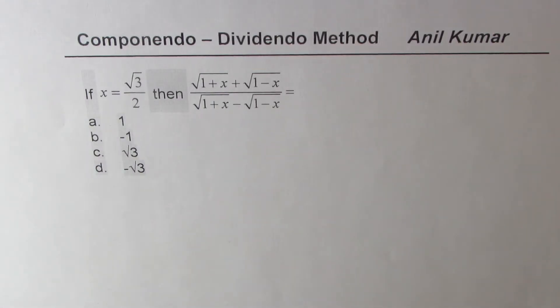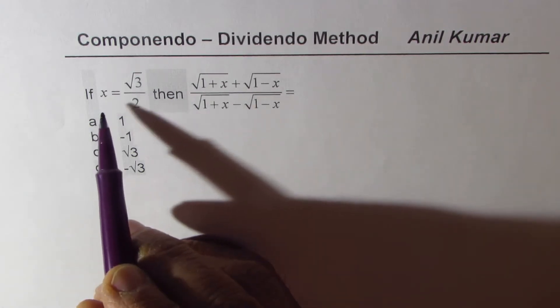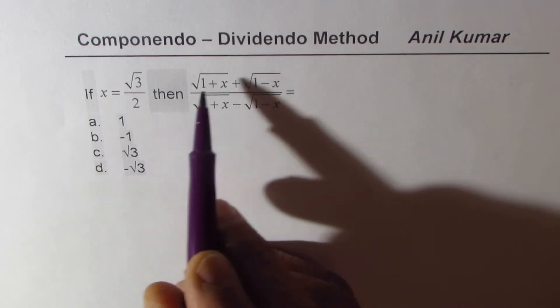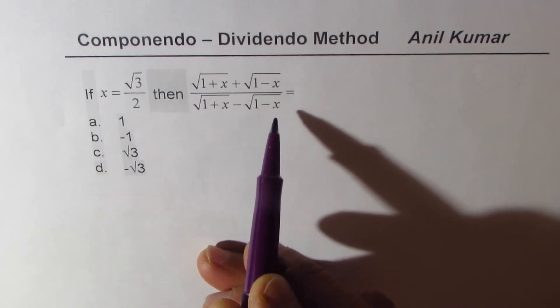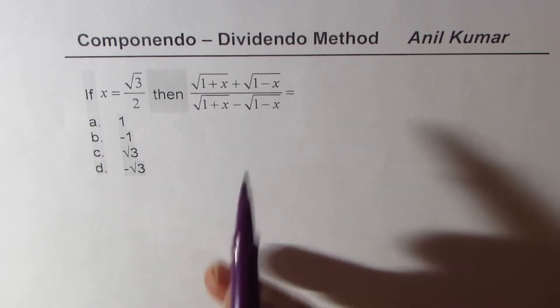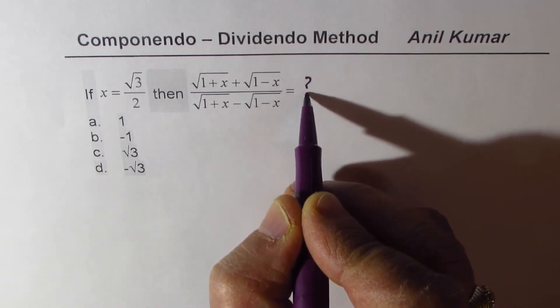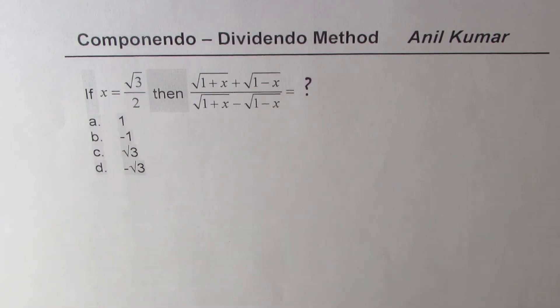The next question is: if x equals the square root of 3 over 2, we are given the value of x, then evaluate the given expression. Find its value and match it with one of the provided answers.